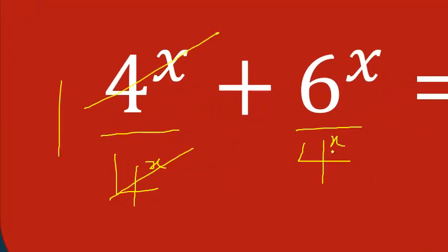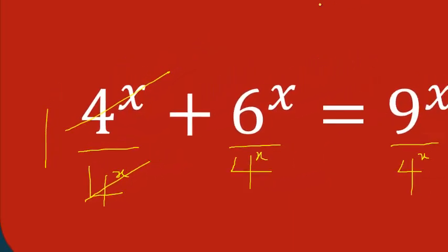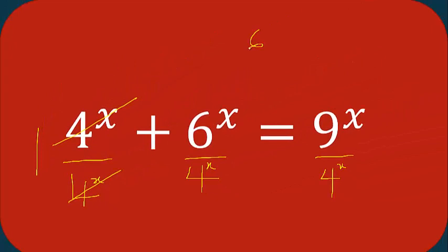The first term will cancel out, so you'll have 1 here. Now 6^x over 4^x is the same as (6/4)^x. Don't forget you can reduce this one - 6 divided by 2 is 3, and 4 divided by 2 is 2, so this is the same as (3/2)^x.